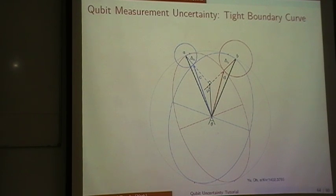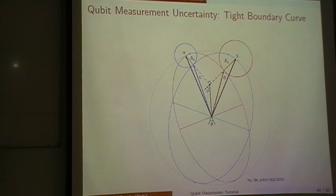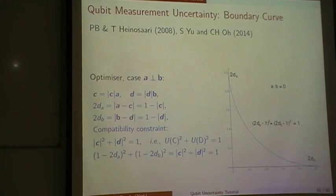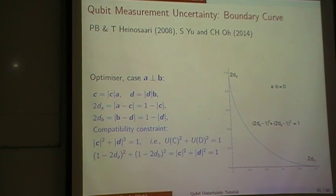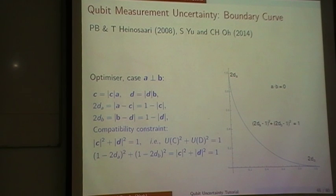They did this as a purely geometric exercise, unfortunately not dwelling on the interpretation so much of what they got. Looking at it, it's a rather off-putting result at first, but if you think about it, it is very neat and can be interpreted. Let's look at the case where A and B are orthogonal — maximally incompatible. Then the optimizing constellation is one where C is in the direction of A and D is in the direction of B. The distances become: two times the distance DA equals one minus the length of C, and likewise for D. The compatibility constraint is C squared plus D squared equals one — as I said, when C and D are orthogonal, that is what comes out — or equivalently, the sum of the squared unsharpness values is one. Then if you take 2DA minus one squared plus 2DB minus one squared equals one, you get a circular relation in DA and DB, and that's the full boundary curve in the case where A and B are perpendicular.